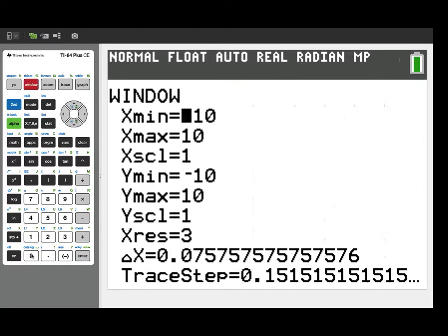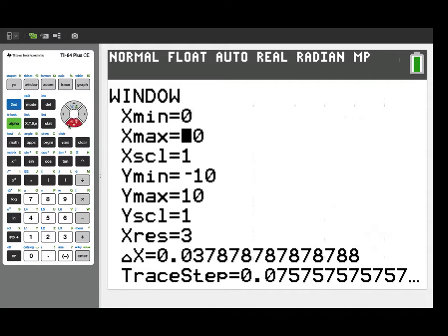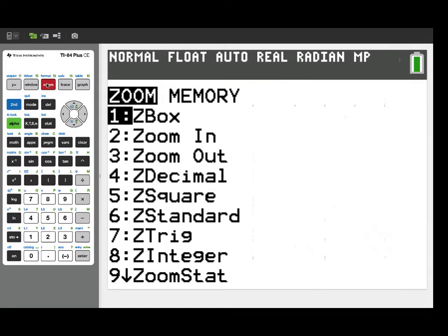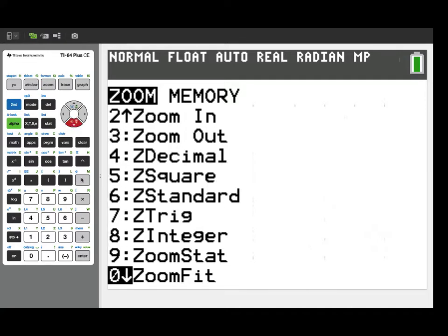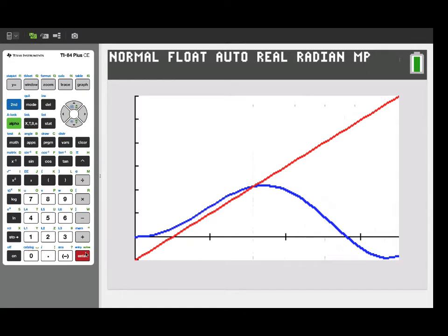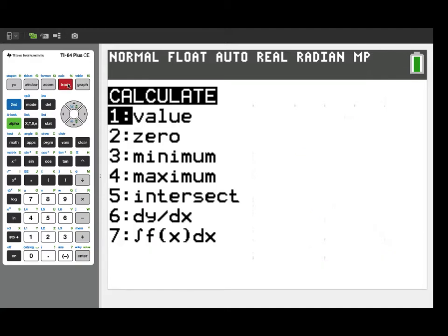Now, I do want to go back to the window. Make sure I've got 0 to 3.5 set up for our domain. There we go. And again, I'll do the zoom fit so that we get a decent window showing both of the graphs now. So we'll enter that, and there's a picture of the two graphs. Where those two velocity graphs intersect is going to be the time at which they're moving at the same velocity.